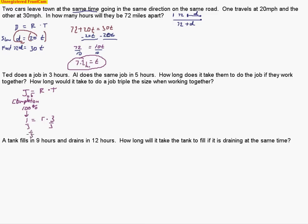Notice what the rate is. The rate is just the reciprocal of the time. So the rate at which Ted does the job is one third, one part out of three parts every hour. After two hours, he's done two parts out of three parts. After three hours, three parts out of three parts, which equals one, which is a job completion.